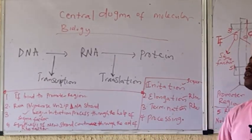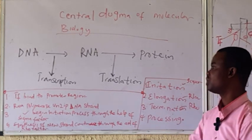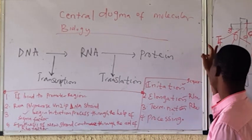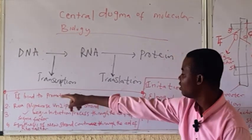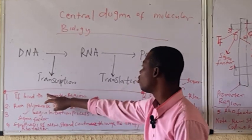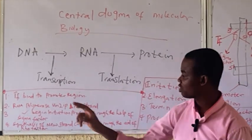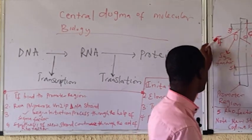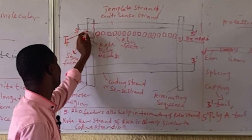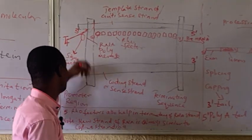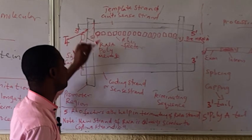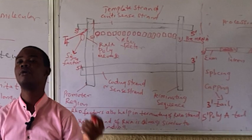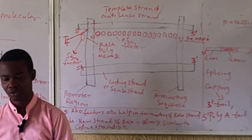In the process of transcription, the first stage is initiation. There is what we call the transcription factor (TF). The transcription factor will bind to the promoter region. When the transcription factor attaches to the promoter region, it will activate the release of RNA polymerase.